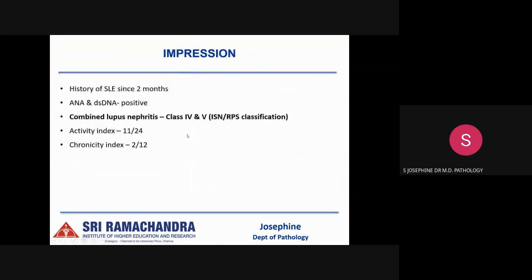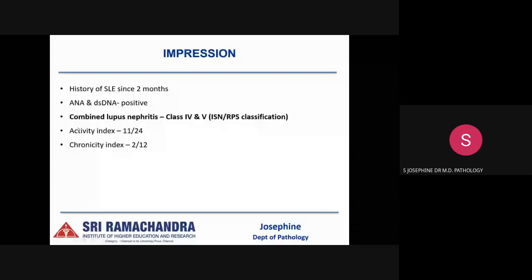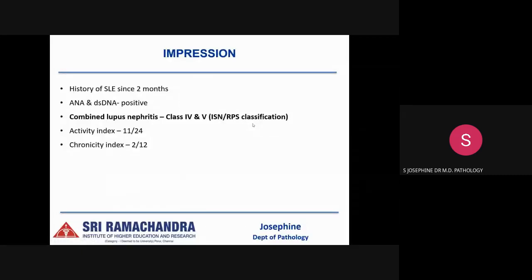With the previous known history of SLE since 2 months and ANA and double-stranded DNA being positive by immunofluorescence, we gave a diagnosis of combined lupus nephritis class 4 and 5 according to the ISN/RPS classification, with an activity index of 11 out of 24 and a chronicity index of 2 out of 12.